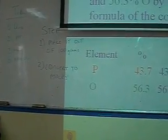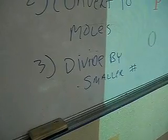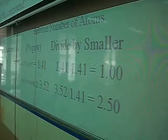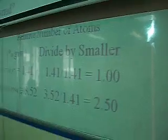So now you have these mole values for your numbers. You're going to step number three. You're going to divide by the smaller number. And this will give you one value will be 1 and one value will be 2.50.